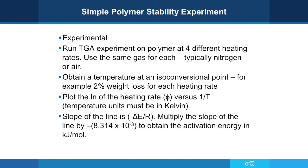The experiment itself is very, very simple. We run the TGA experiment on the polymer at four different heating rates using the same gas — typically nitrogen or air, or even maybe oxygen if you choose. For our experiment, we chose Teflon and ran it in nitrogen. Obtain the temperature at an isoconversional point, for example where 2% weight loss occurs for each heating rate. You then plot the natural log of the heating rate versus 1 over T, and the temperature units must be in Kelvin.